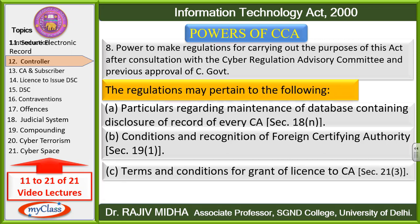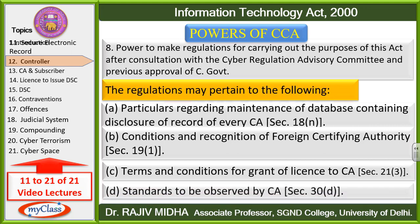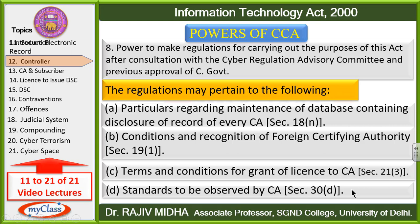C) Terms and conditions for grant of license to certifying authority — Section 21, Subsection 3 — kin terms aur conditions ke upar certifying authorities ko license to issue digital signature di jaayegi, un terms aur conditions ke related bhi woh regulations bana sakta hai. D) Standards to be observed by certifying authority — Section 30, Subsection D — certifying authority kin standards ko follow karegi. Jin standards ko certifying authorities observe karein, un standards se related rules regulations banane ki power controller ke paas hai.